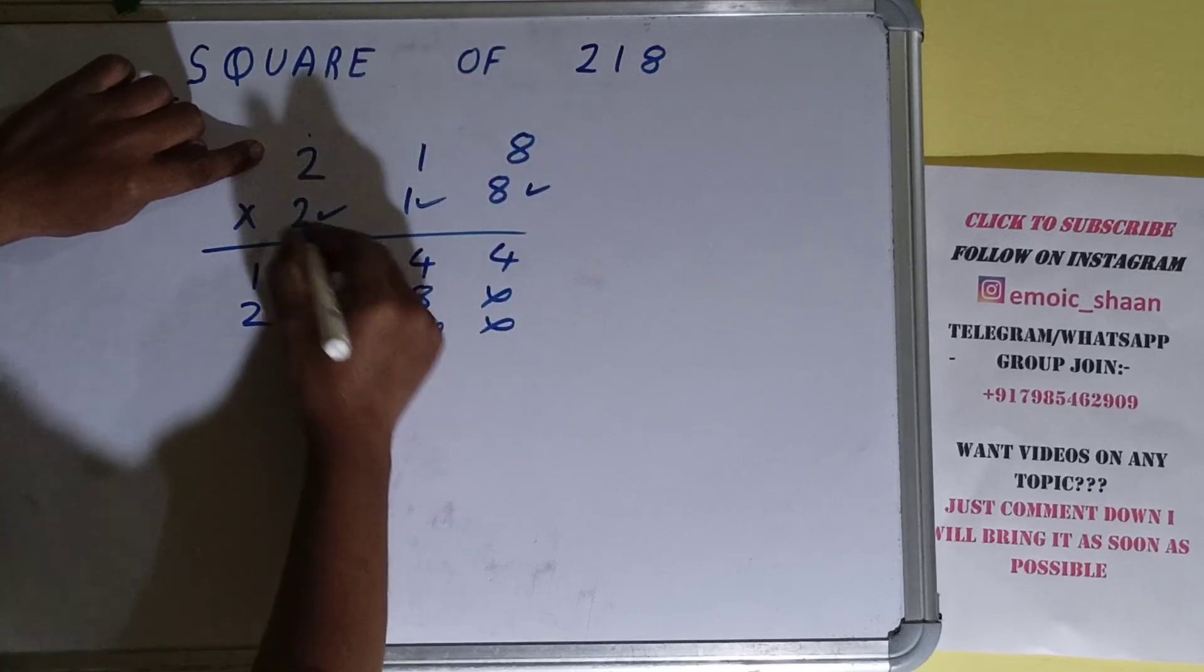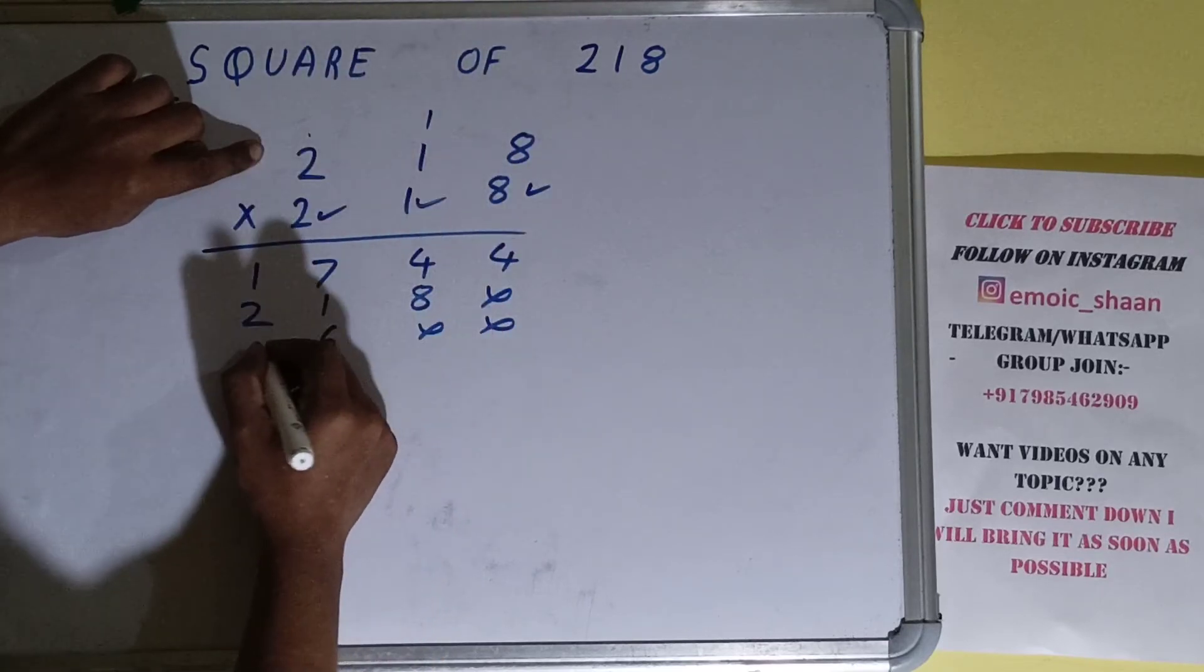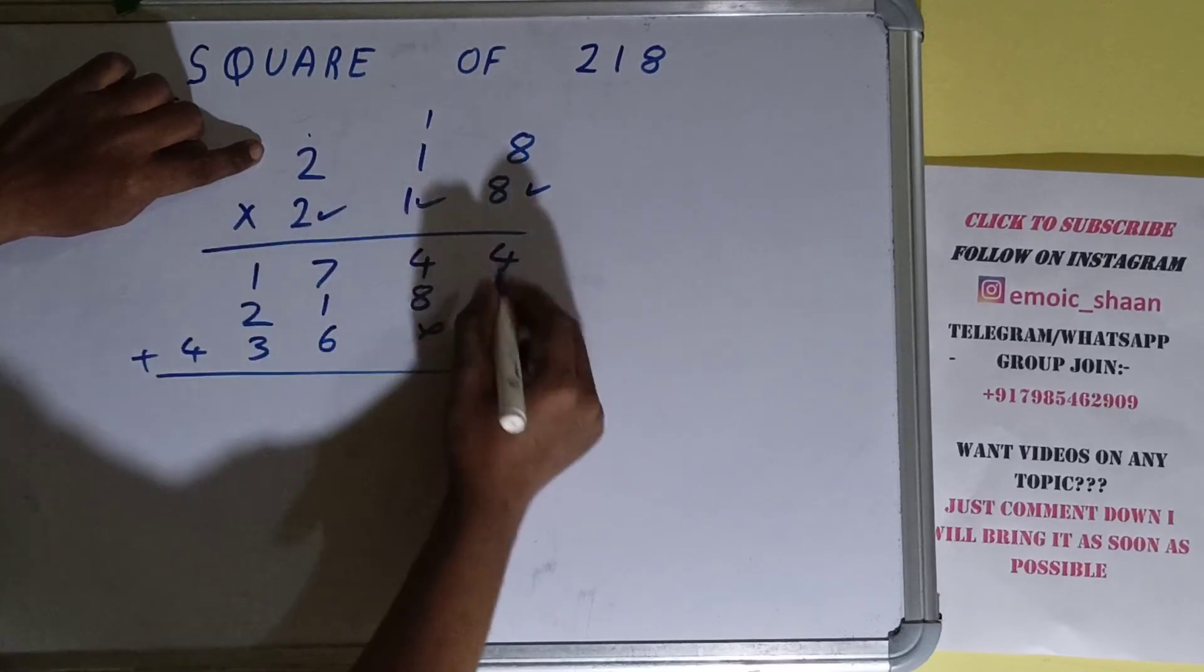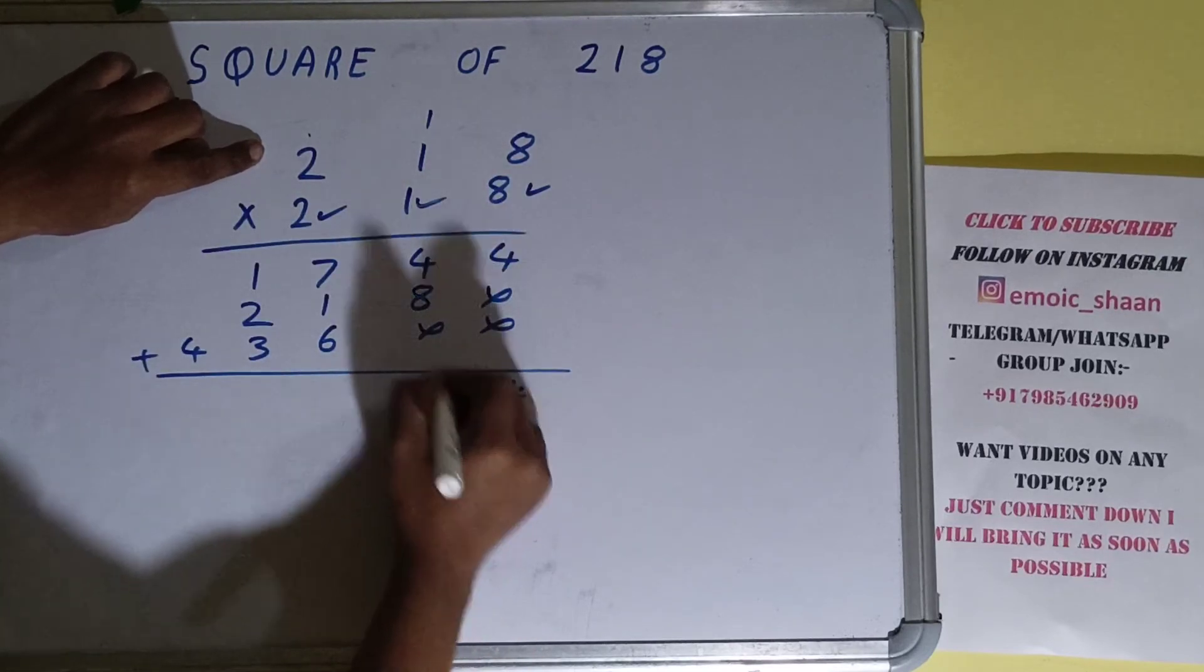will be multiplying. 2 times 8 is 16, 1 carry. 2 times 1 is 2 plus 1 is 3. And 2 times 2 is 4. Just add all. This will be 4, this will be 2